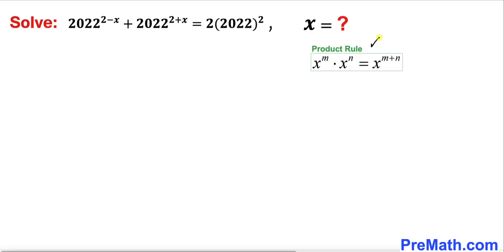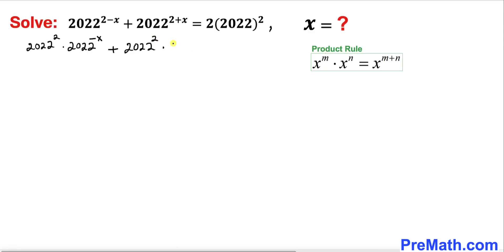Let's recall the product rule of exponents, which we are going to apply to this given equation. On the left hand side, the first term can be written as 2022 whole power 2 times 2022 power negative x, plus the second term written as 2022 whole power 2 times 2022 whole power x, equals 2 times 2022 whole power 2 on the right hand side.